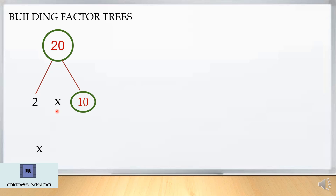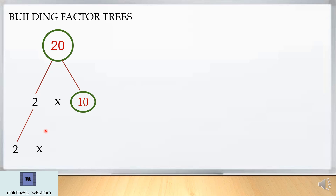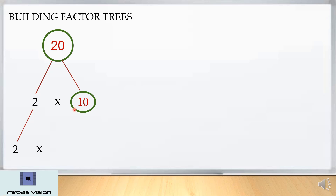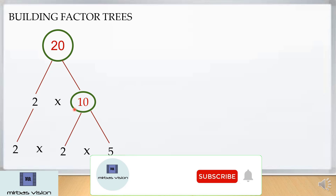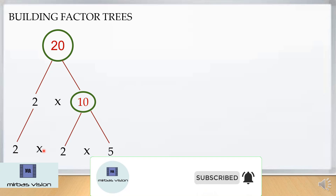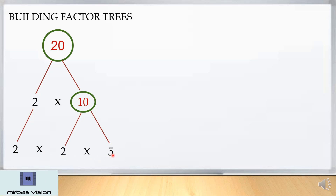Numbers can be multiplied in any order. Here, 2 cannot be further broken up, so just write 2 down. And 10 can be further broken up — 10 can be further broken up as 2 fives. So here we got a pattern: 2 into 2 into 5.